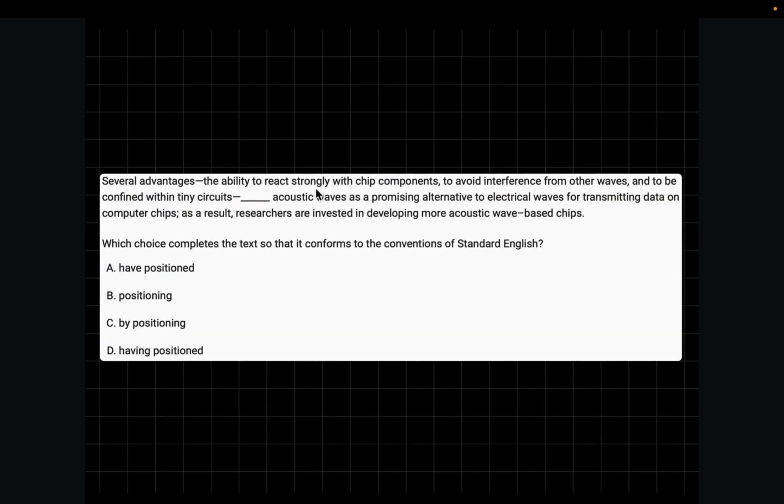Several advantages. The ability to react strongly with chip components to avoid interference from other waves and to be confined within tiny circuits. Blank. Acoustic waves is a promising alternative to electric waves for transmitting data on computer chips. As a result, researchers are invested in developing more acoustic wave-based chips. Okay. So whenever you see two dashes in the text, the sentence in between is just extra or background information. So if you swap the dashes for commas and you read it again, you'll see that this is like a relative clause sentence. However, you'll not pick the choice that shows verb plus ing. In this case, choice B or choice C.